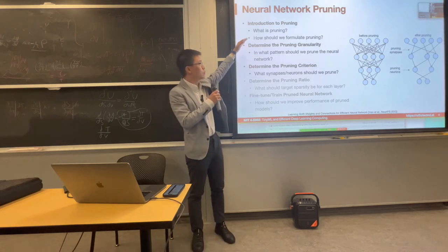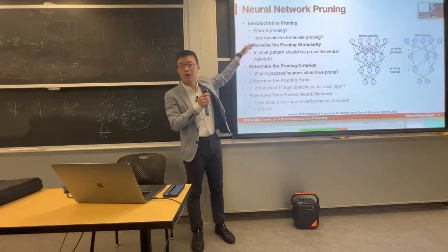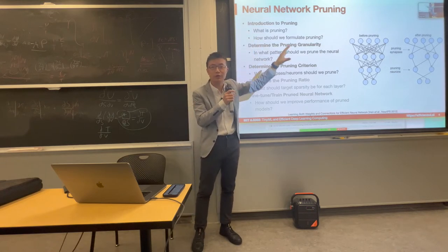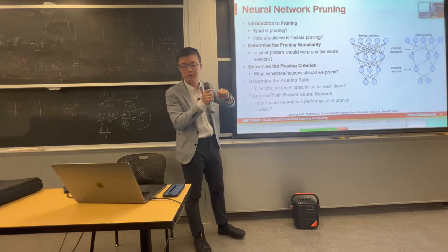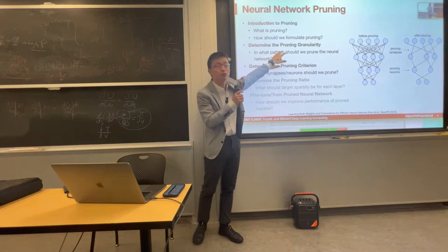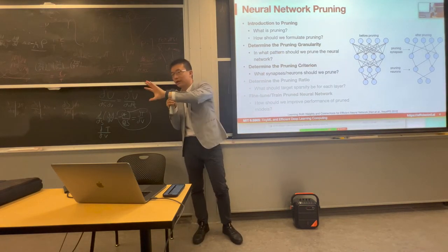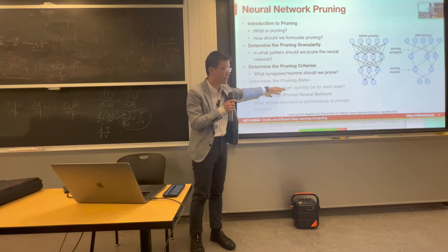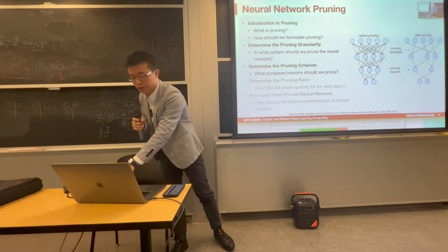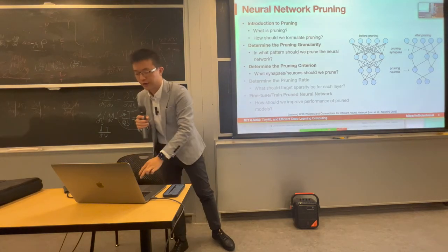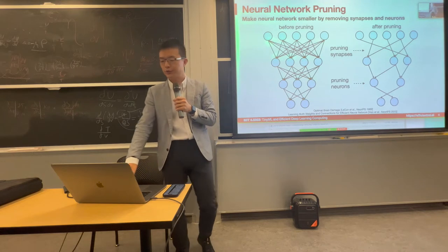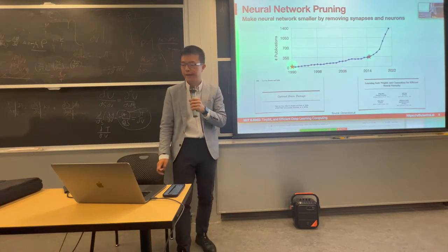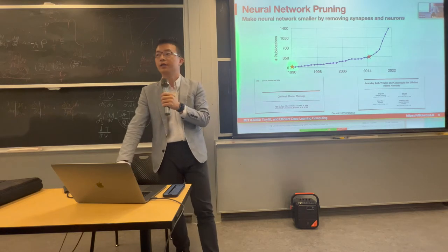Let's review what we've already covered. We've gone through what pruning is: reducing neurons and weights, determining pruning granularity from fine-grained pruning — where we can prune more — to coarse-grained pruning, and the pruning criterion. Now we are at the stage of determining the sparsity ratio and fine-tuning the neural network. Pruning basically means removing synapses and neurons, and it has become popular and widely adopted by industry in recent years.